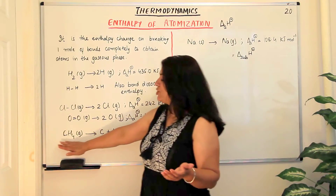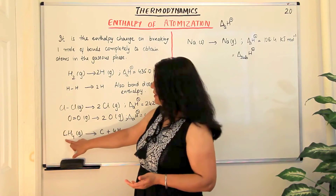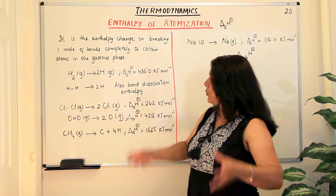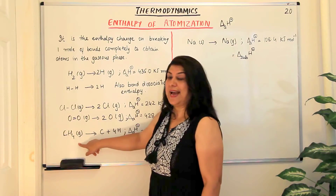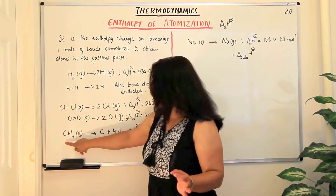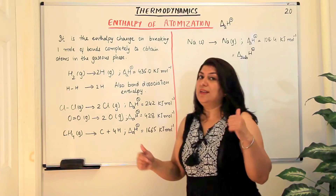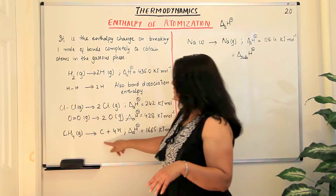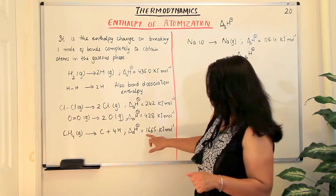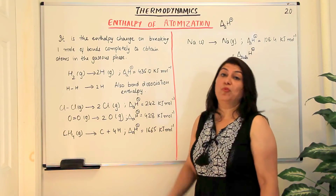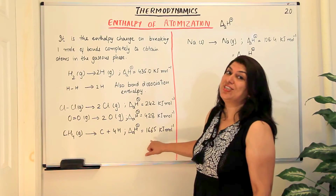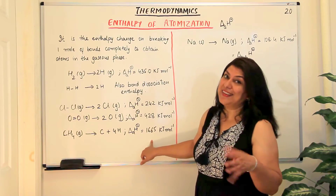Now we come to a polyatomic molecule like methane. In methane there is one carbon and four hydrogens. There are four bonds between carbon and the four hydrogens. In the breaking of these four bonds to give you one carbon and four hydrogen atoms, the enthalpy of atomization is 1665 kilojoules per mole.